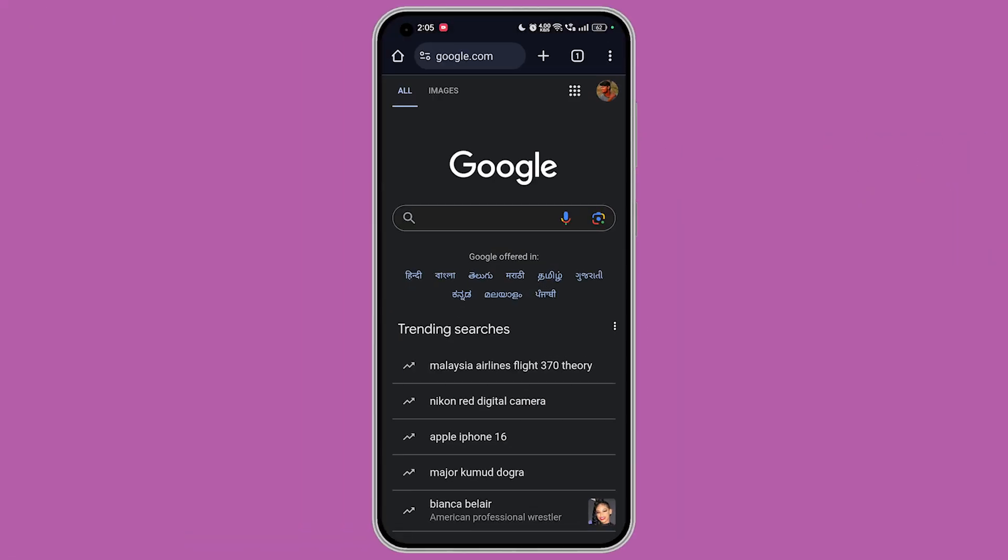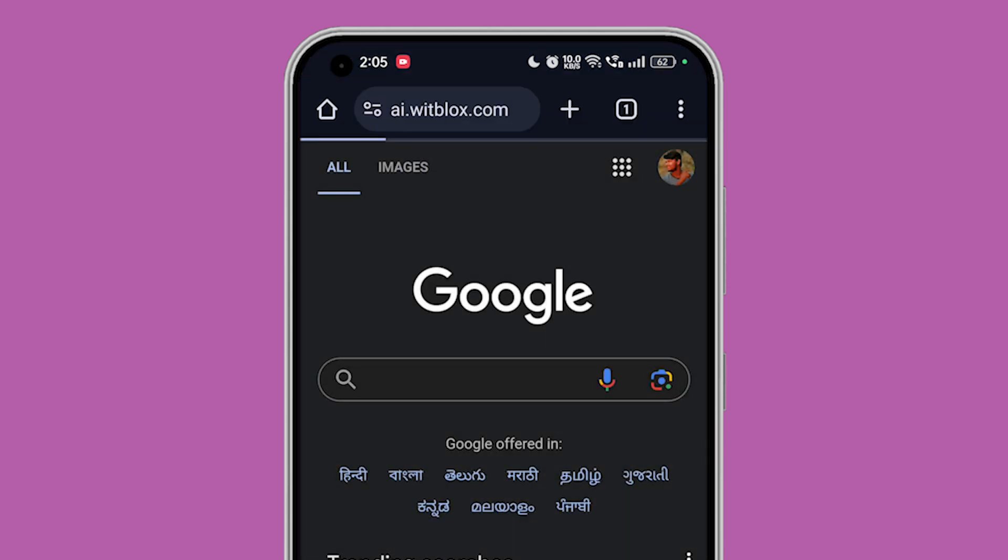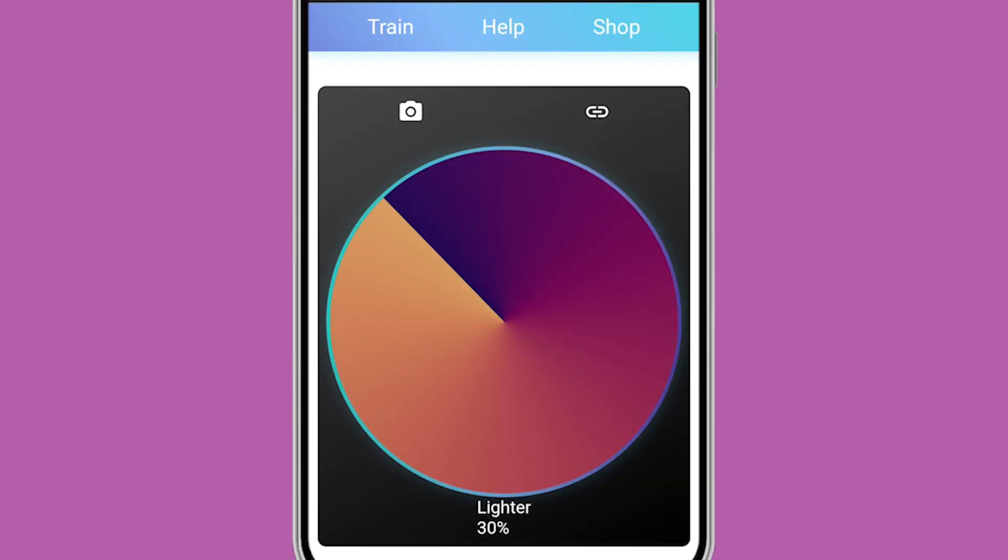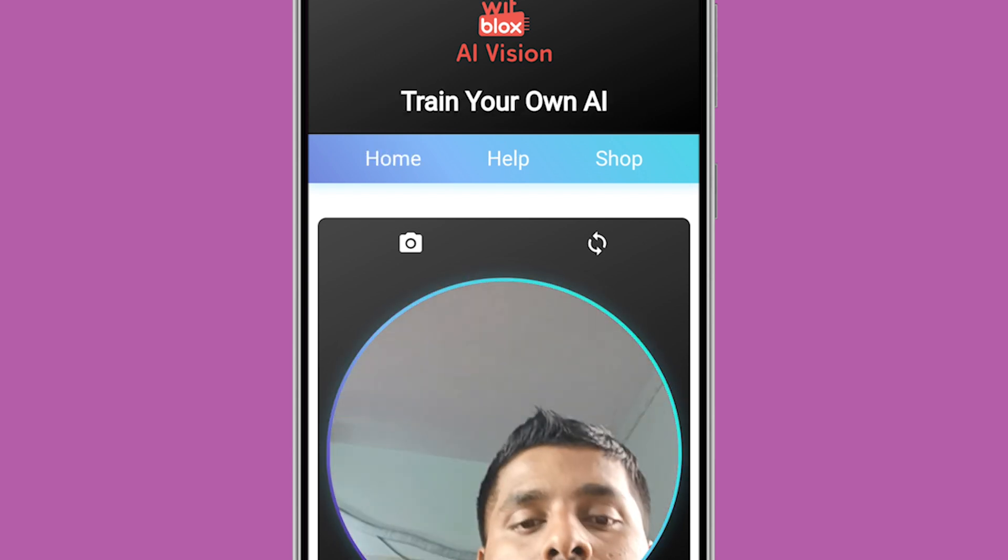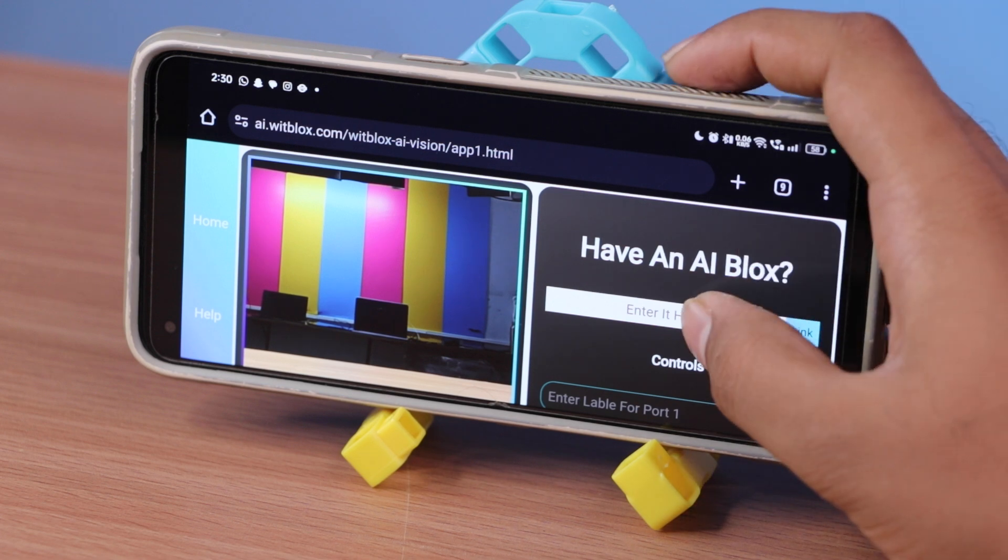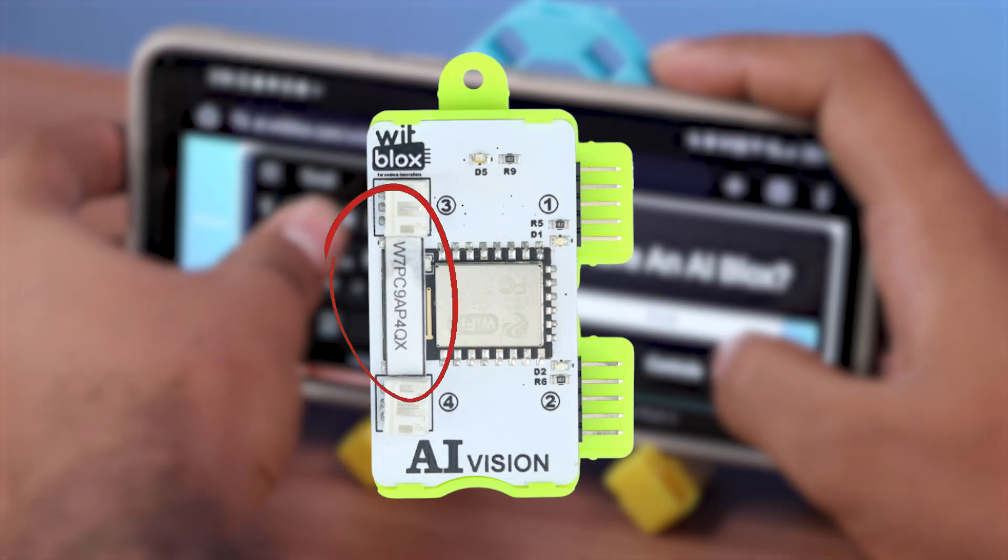Go to ai.wipblocks.com. Click on the visit app option and allow all authorizations. Now click on the train option. Enter the unique code on your AI blocks and click link.